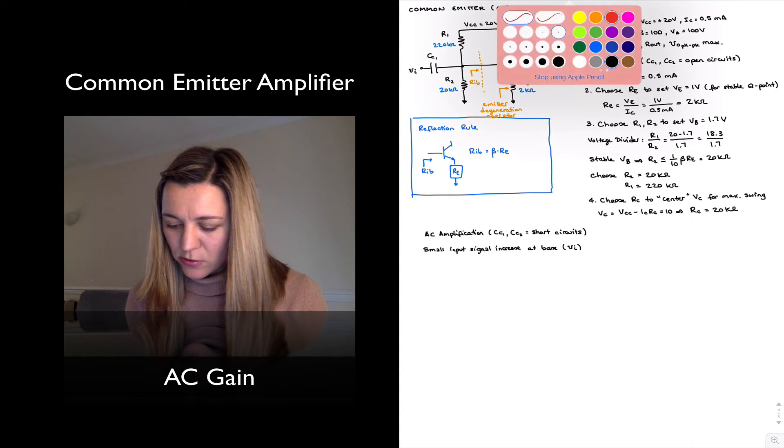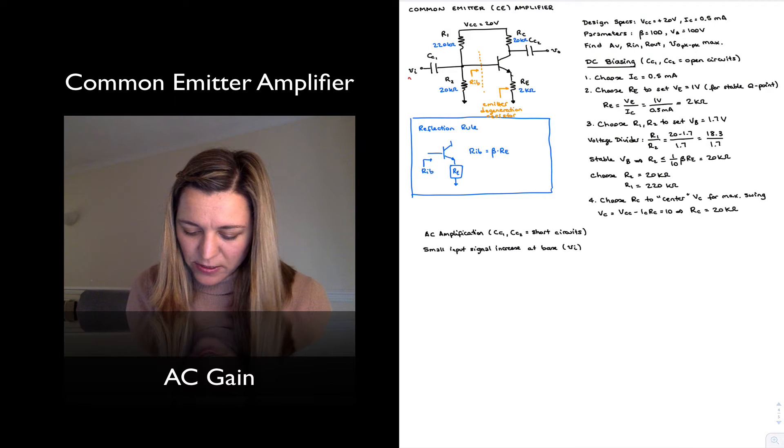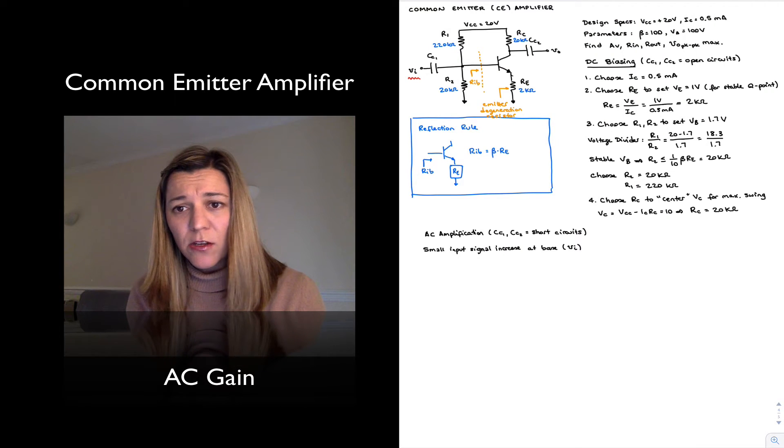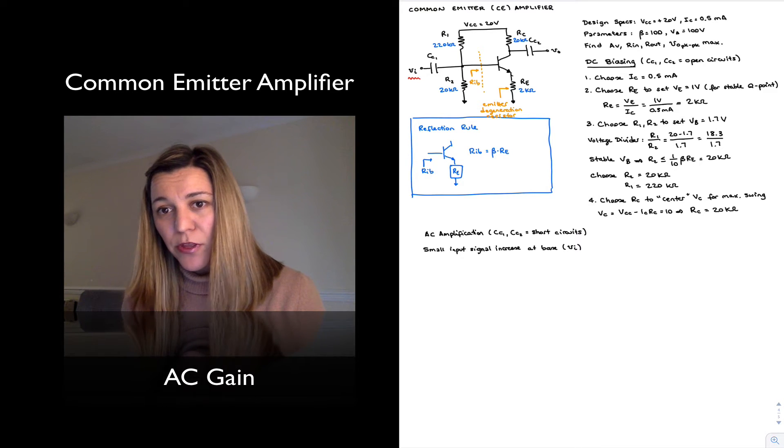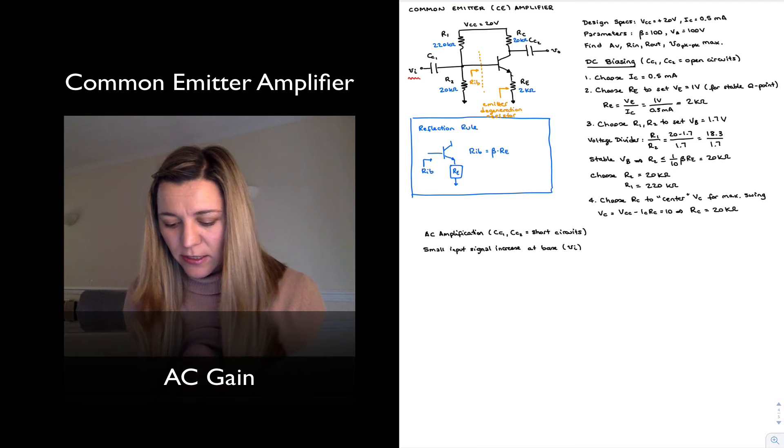So let me draw what's happening here a little bit. We have our VIN signal. Again, it goes through coupling capacitor CC1, and that capacitor is there so that the input AC signal does not interfere with the DC operating point of the circuit.